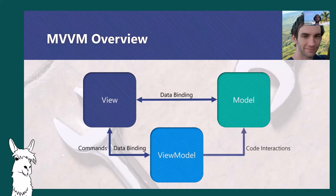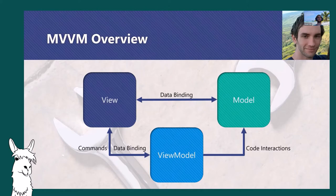Commands also include features such as being able to notify the UI about whether or not they can be executed at any given time. For example, a button might bind its command property to a command wrapping a method in the view model, and dynamically indicate to the user whether it can be clicked. From the view model to the model, we have code interactions — the view model is typically responsible for directly interacting with models, modifying instances and interacting with backend services such as serializing and storing data in a database.